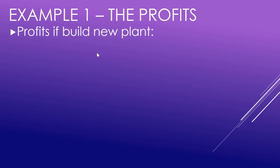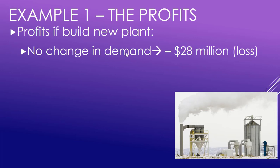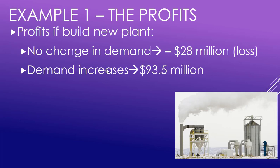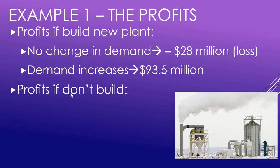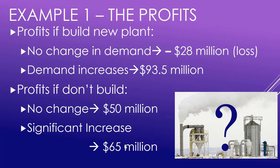The manufacturer is considering whether to build a new plant to meet growing demand. If they build the new plant and demand does not increase as anticipated, they would lose roughly $28 million. But if demand does significantly increase, they would gain $93.5 million. If they don't build the plant and there's no change in demand, they would make $50 million; if demand significantly increases, they'd only make $65 million since they're already almost at capacity.